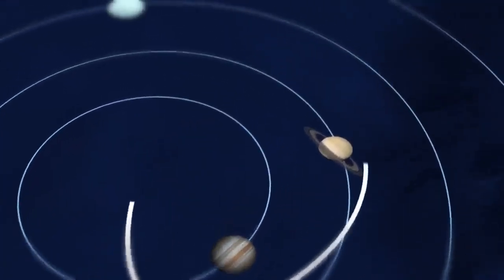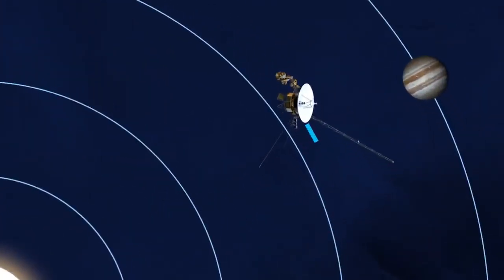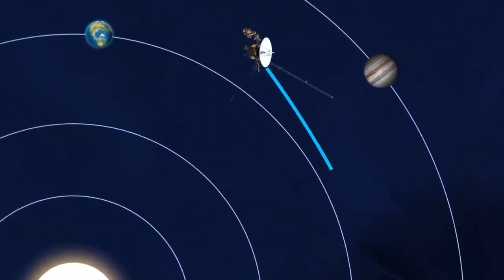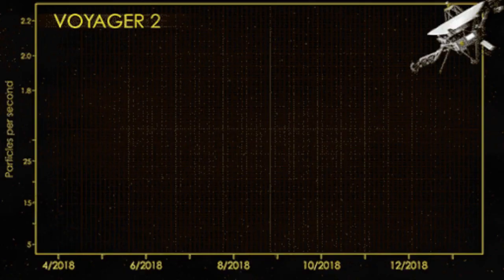On July 21, Voyager 2's antenna was tilted away from Earth due to an unintended command, severing its ability to receive and transmit data. NASA revealed this issue only recently, prompting concern among space enthusiasts and scientists alike.